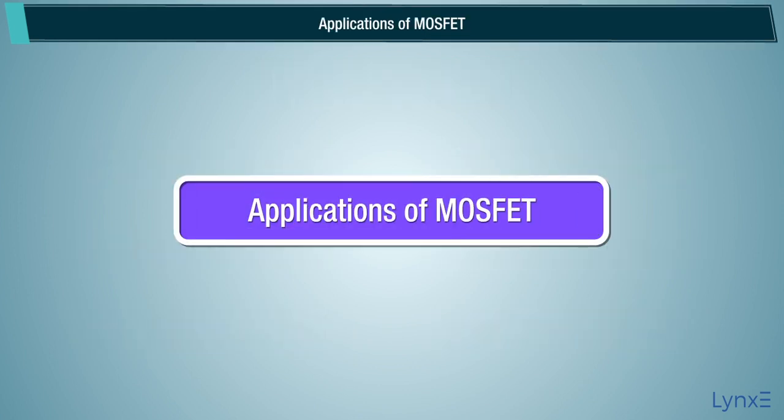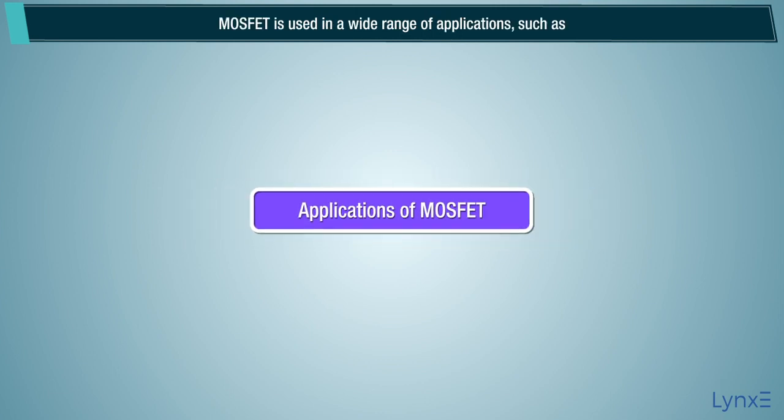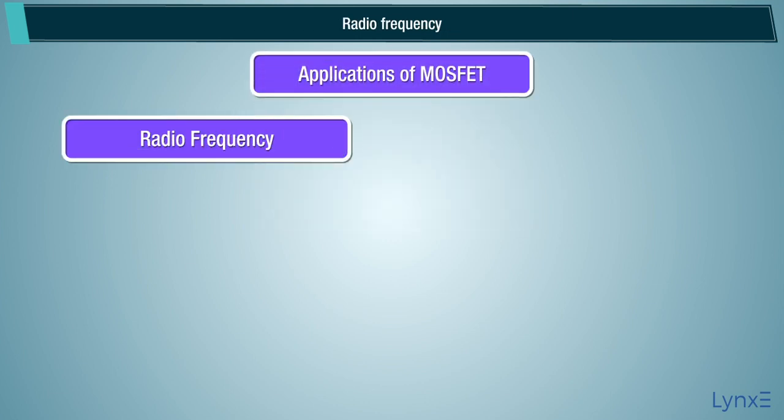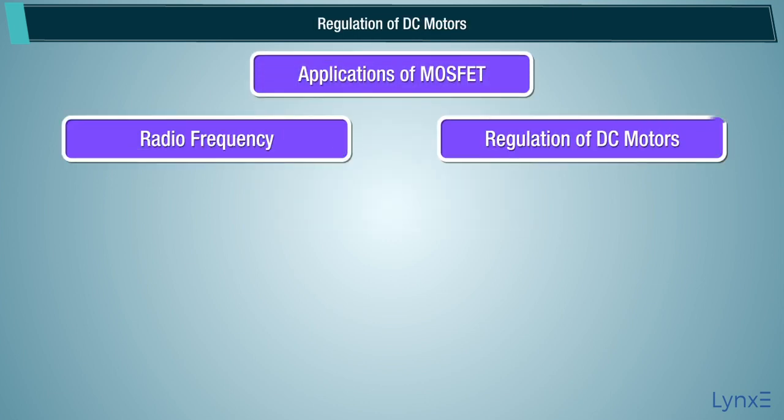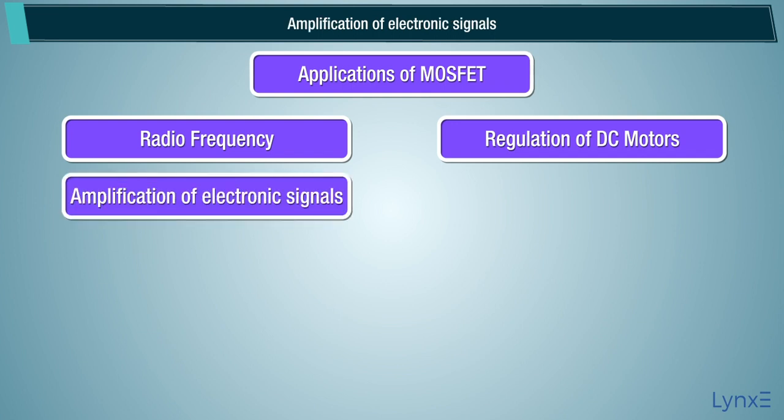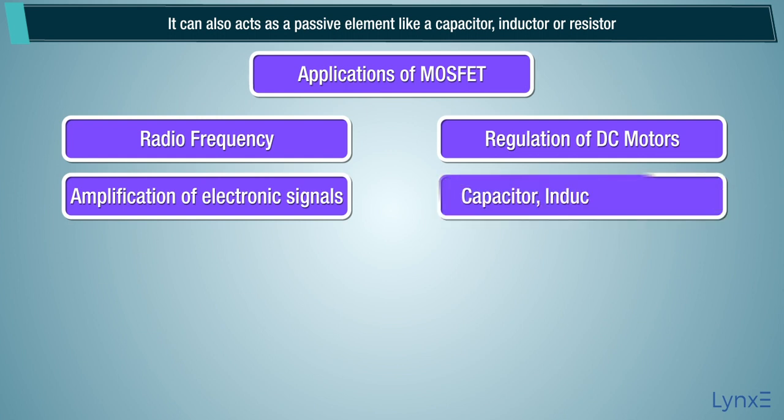Applications of MOSFET. MOSFET is used in a wide range of applications such as radio frequency, regulation of DC motors, amplification of electronic signals. It can also act as a passive element like a capacitor, inductor, or resistor.